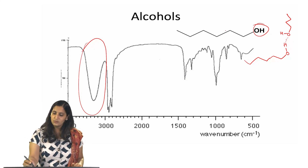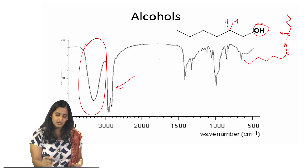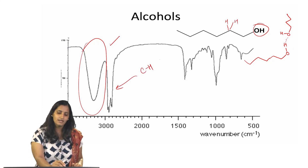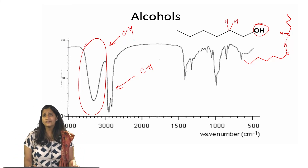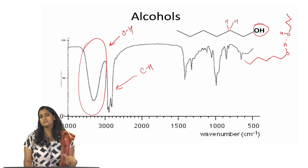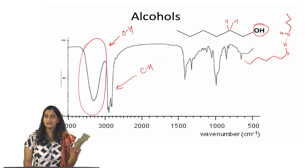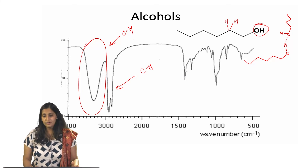You also have C-H peaks here — all of those hydrogens represent the C-H stretch, whereas the broad peak represents the O-H stretch. For reference, you can refer to the IR table of various functional groups and their corresponding stretching frequencies, which has been given as supplementary material.